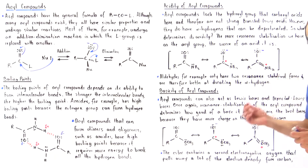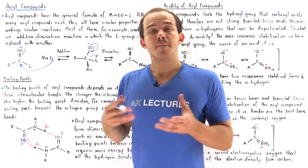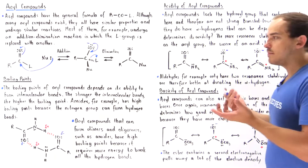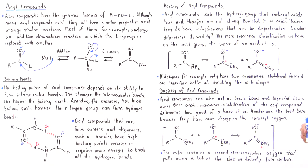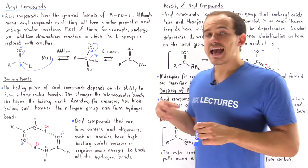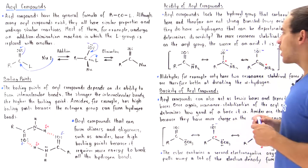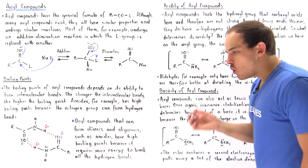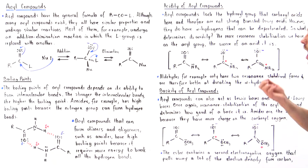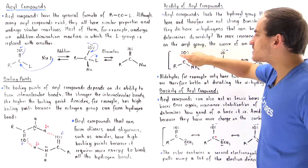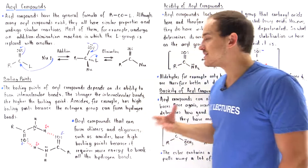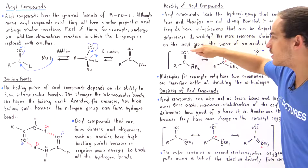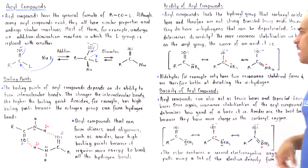Regarding the basicity of acyl compounds, it is also determined by the degree of resonance stabilization, but more specifically by the amount of electron density on the carbonyl oxygen. The center of basicity of an acyl compound is located on this oxygen. The more electron density on the oxygen, the better a base the acyl compound is, because those electrons will act to deprotonate other molecules.